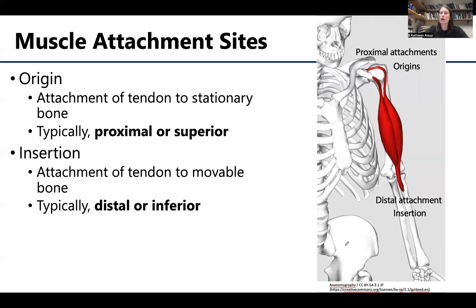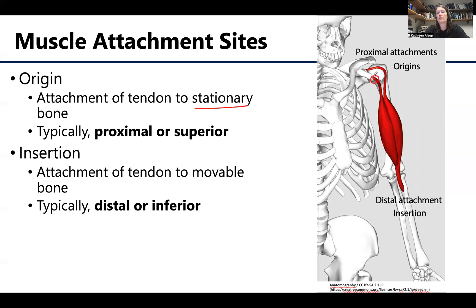Let's talk muscle attachment sites. The term origin means the attachment of the tendon to generally the stationary bone. When thinking about a joint, a muscle generally crosses over a specific joint for its actions to affect it. Generally, you're going to have an origin on the more proximal or superior attachment, and generally that will stay stationary. There's been a movement away from the term origin — oftentimes you'll hear proximal attachment or superior attachment instead.